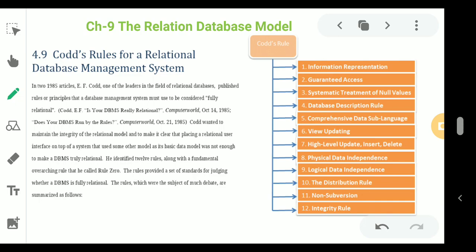Rule 11 is Distribution Independence. A user should be totally unaware of whether or not the database is distributed. It may or may not be distributed, and the user should have no hints regarding this.